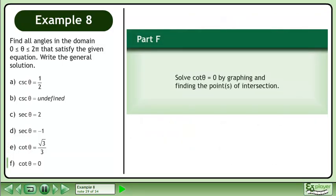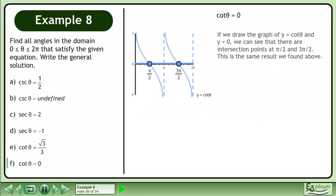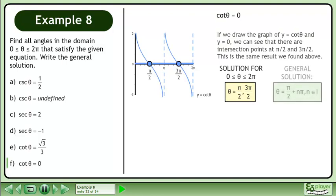In Part F, solve cotangent θ equals 0 by graphing and finding the points of intersection. If we draw the graph of y equals cotangent θ and y equals 0, we can see that there are intersection points at π over 2 and 3π over 2. The solution for θ between 0 and 2π is θ equals π over 2 and 3π over 2. The general solution is θ equals π over 2 plus nπ, where n belongs to the set of integers.